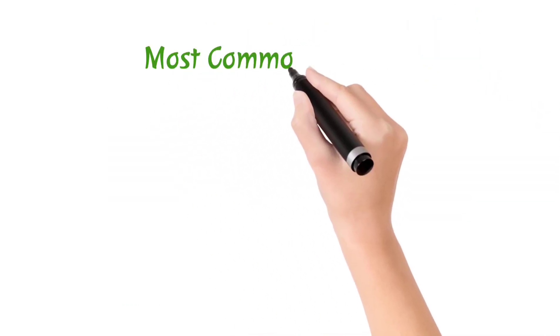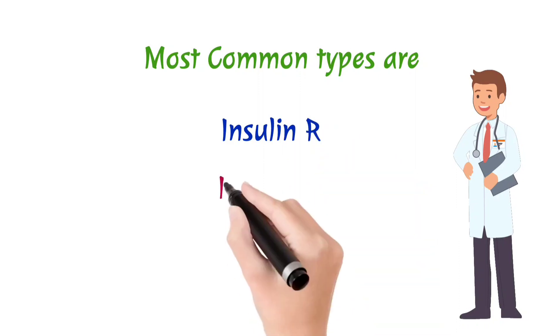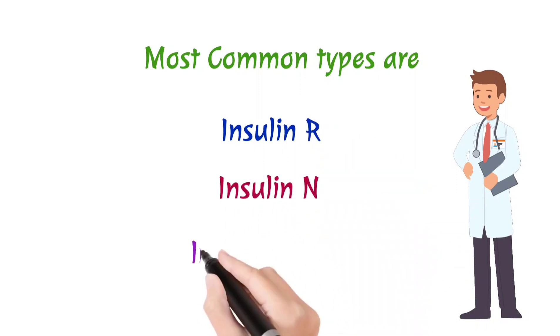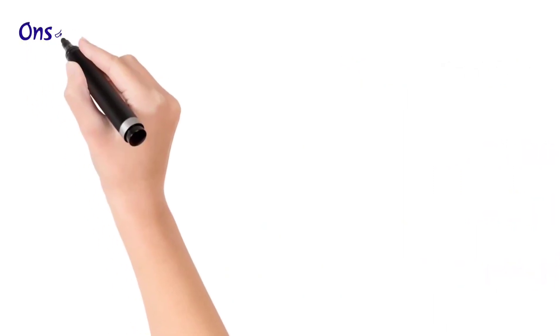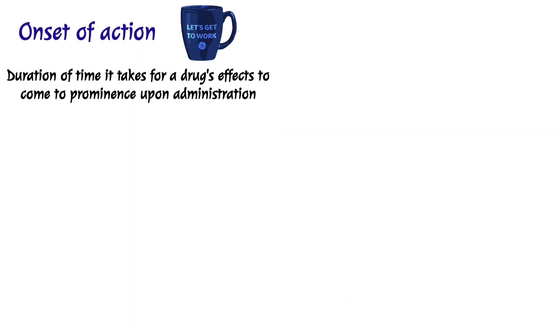This is helpful for decreasing the blood glucose level. The most common types of insulin suggested by doctors are Insulin R, Insulin N or NPH, and Insulin 70/30. So the onset of action is the duration of time it takes for a drug's effects to come to prominence upon administration.